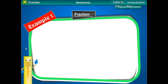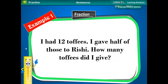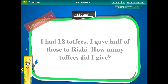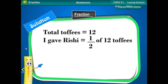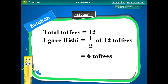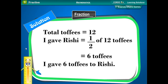Example 1: I had 12 toffees. I gave half of those to Rishi. How many toffees did I give? Solution: Total toffees = 12. I gave Rishi 1 upon 2 of 12 toffees, which is equal to 6 toffees. I gave 6 toffees to Rishi.